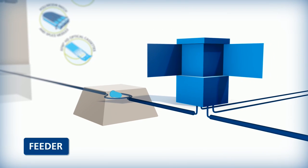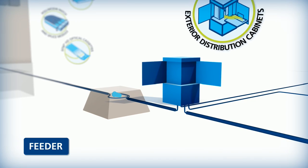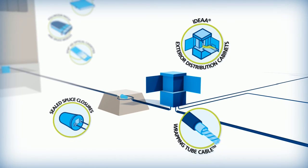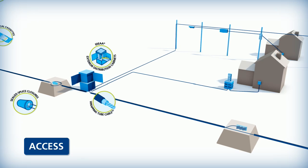In the feeder or middle mile, AFL provides outside plant cable and connectivity products ranging from outdoor-rated cables like wrapping tube cable to sealed splice closures.